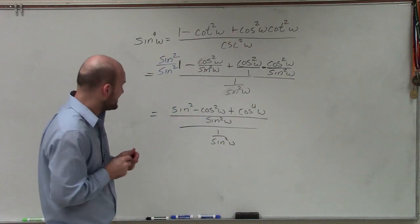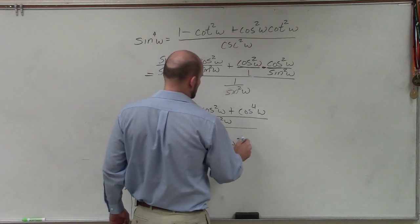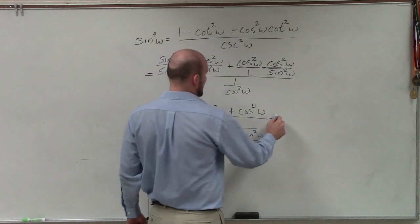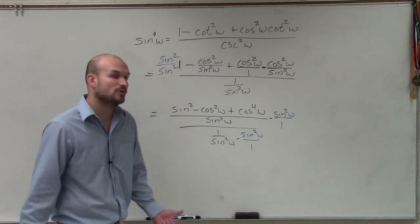Now, again, I wanted to eliminate this sine squared. So what I'm going to do is I'm going to multiply by sine squared of w in the denominator and in the numerator. And remember, I can do that because I'm keeping equivalent fractions.